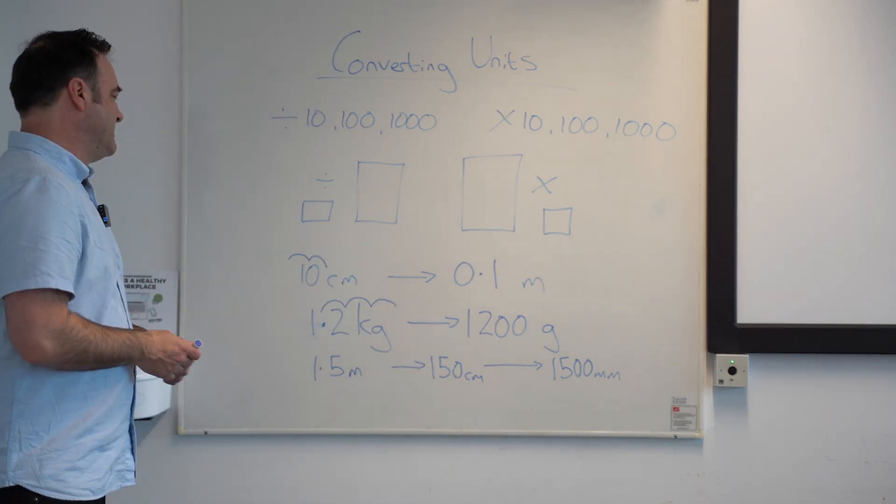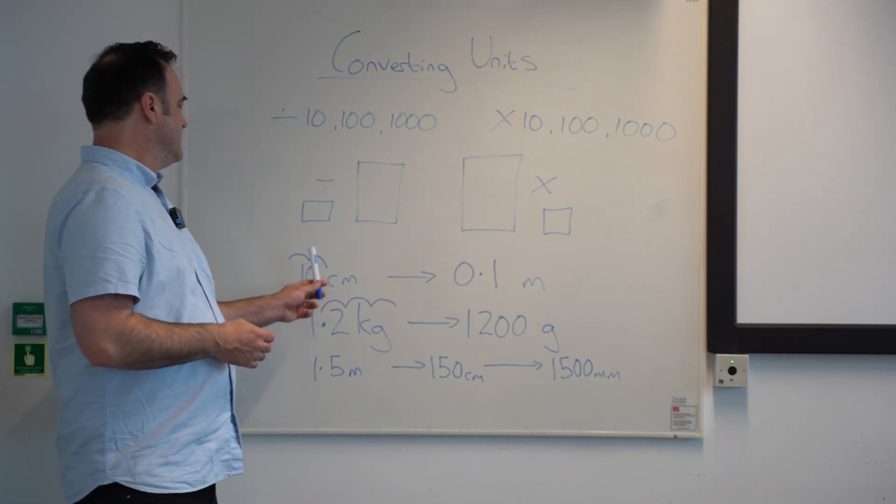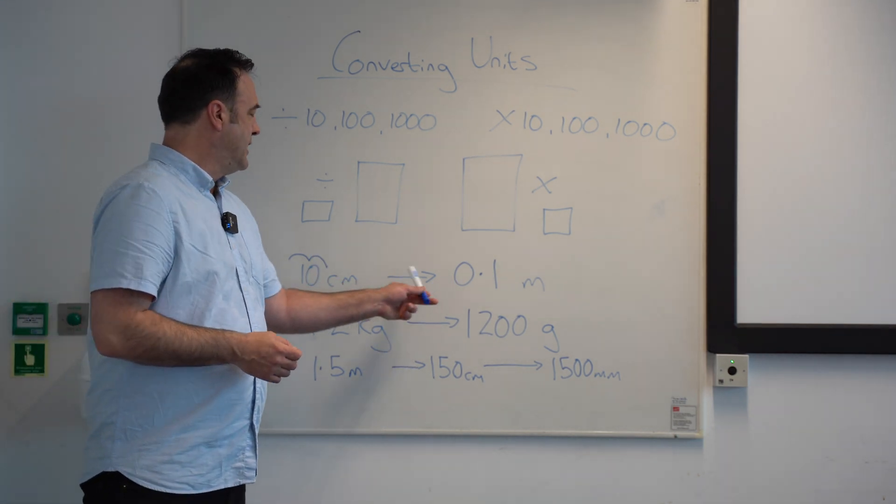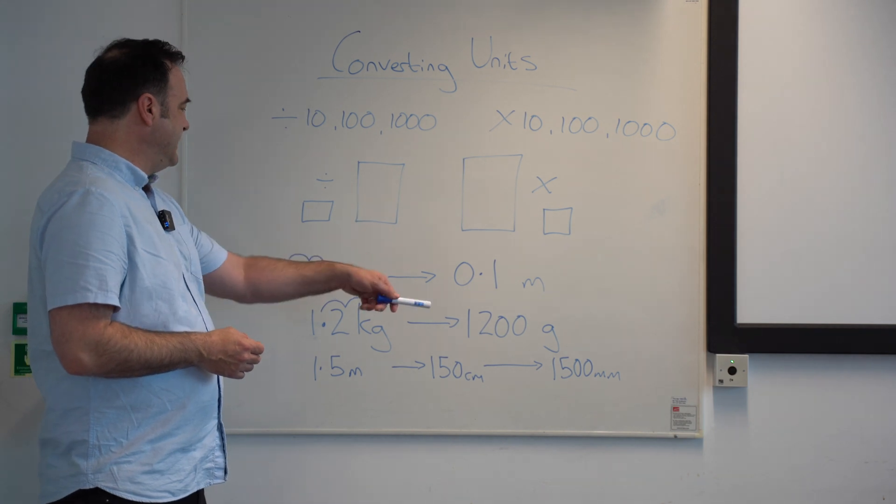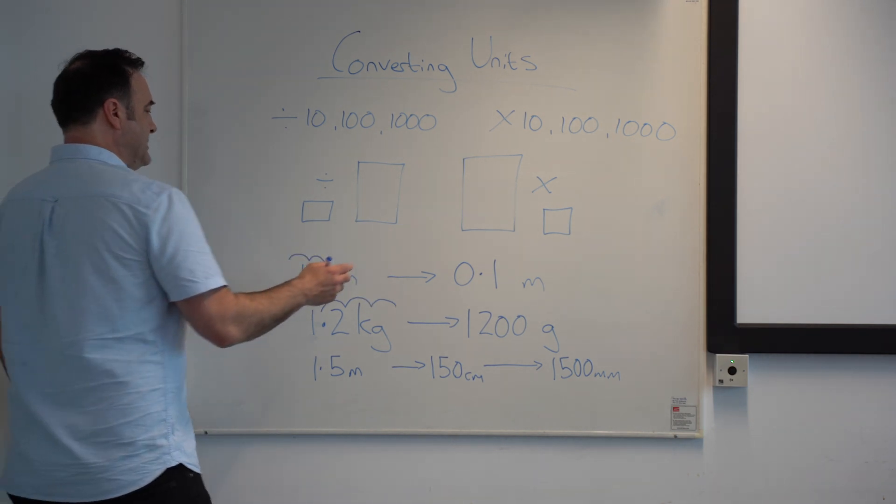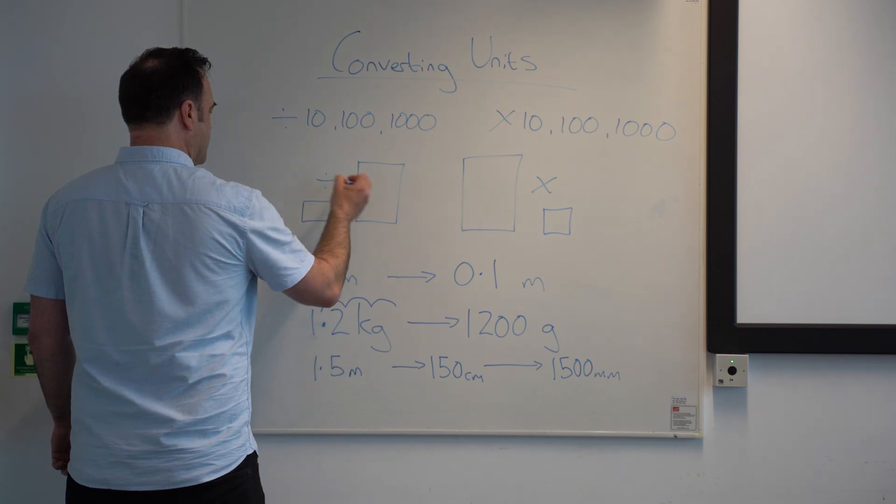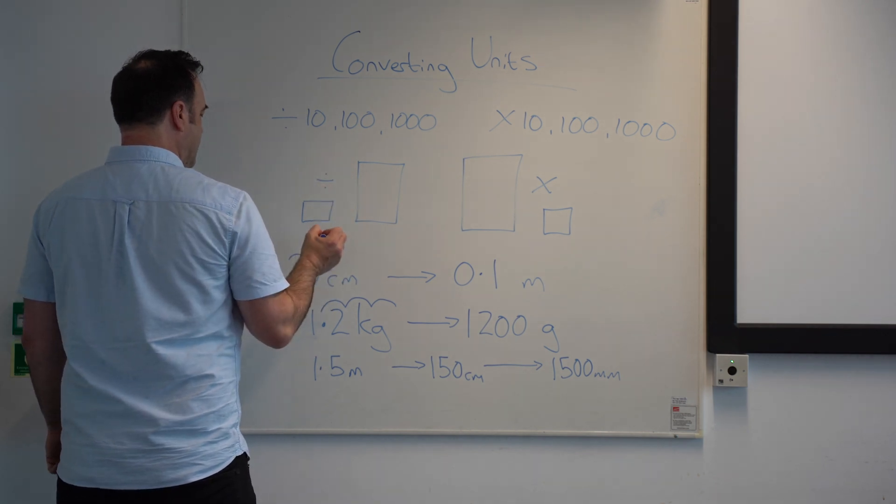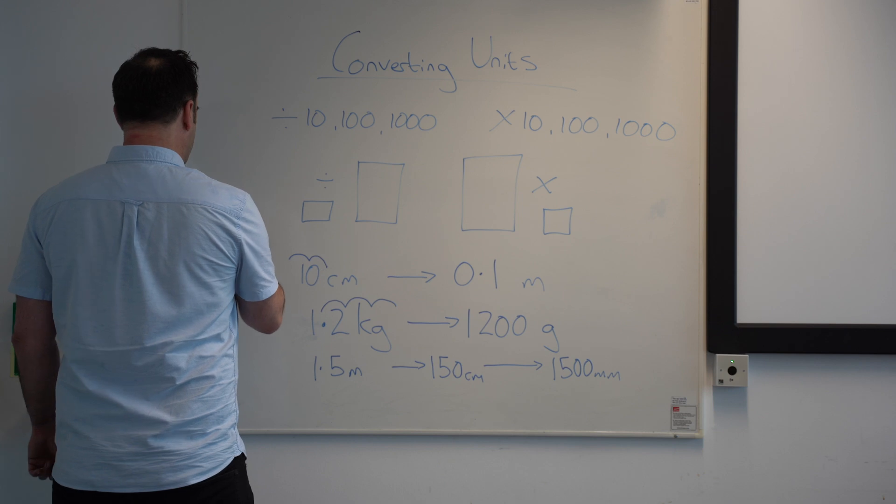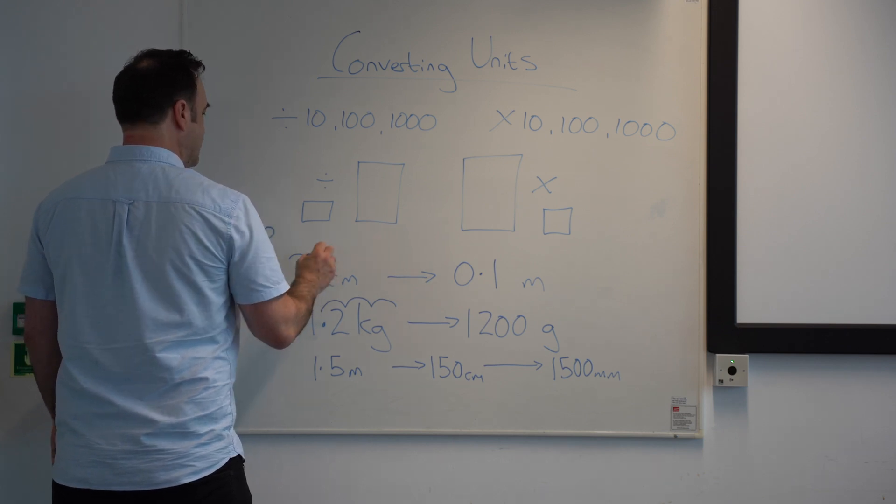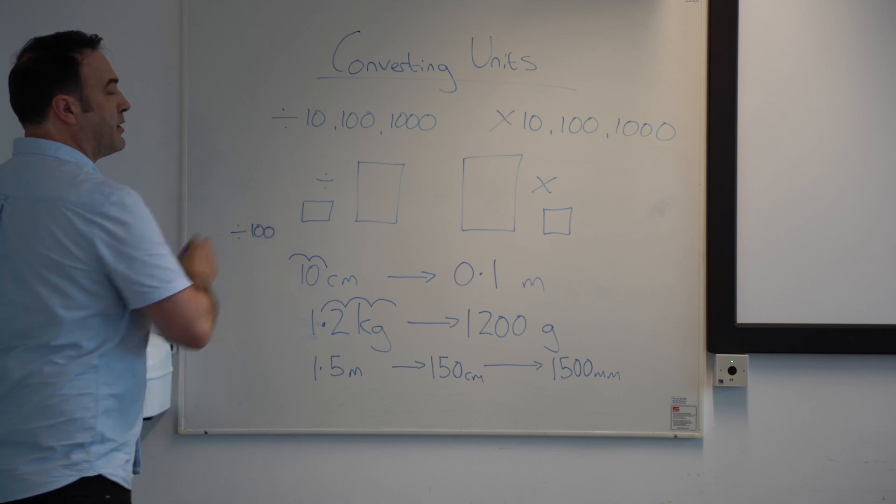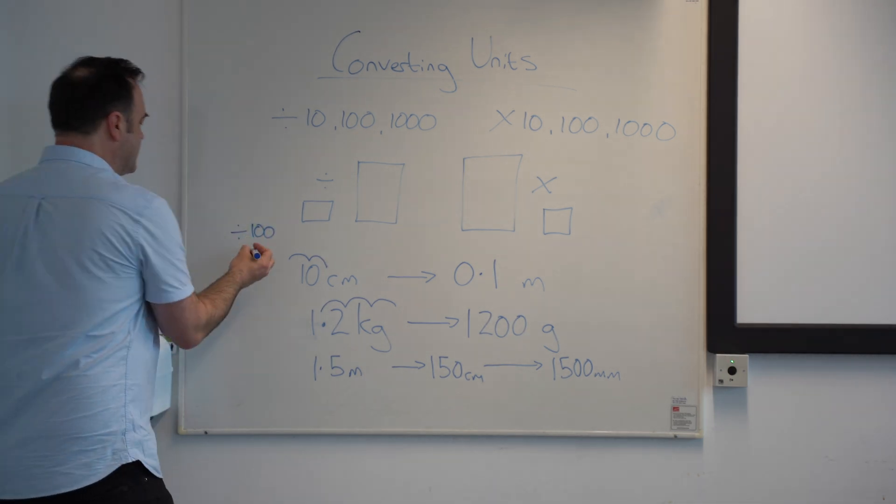So let's look at some examples. So if we go from 10 centimetres, if we're converting to metres, what we do is we're going from a small unit to a big one, so we're dividing, and there are 100 centimetres in a metre, so we're dividing by 100. So I'll get kids to write this down.